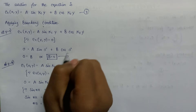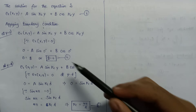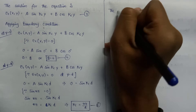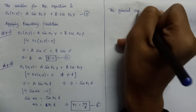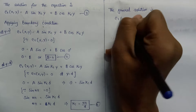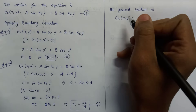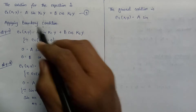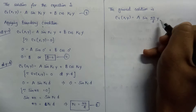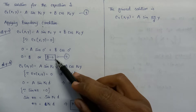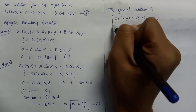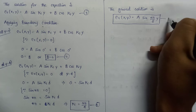This is equation number four. Now, substituting the values of B and kc into the general solution equation, the general solution becomes: ez(x,y) equals A sin(nπ/d · y). Since B equals zero, the cosine term vanishes. This is our general solution for the Helmholtz equation, and it is equation number six.